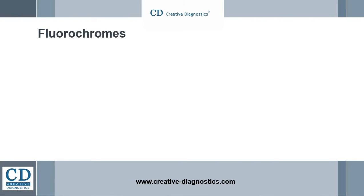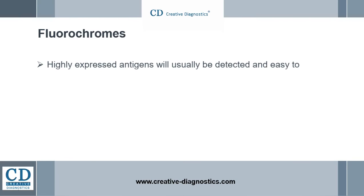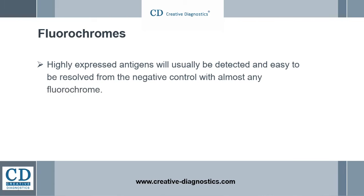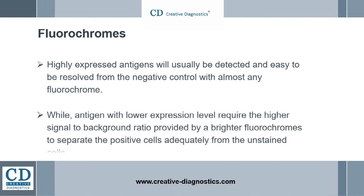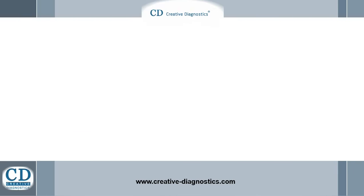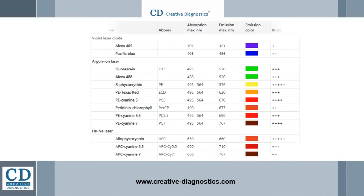The fluorochromes are usually fluorescence conjugated antibodies or fluorescence dyes. Highly expressed antigens will usually be detected and easy to resolve from the negative control with almost any fluorochrome. Antigens with lower expression levels require a higher signal-to-background ratio provided by brighter fluorochromes to adequately separate the positive cells from the unstained cells. This table displays parameters of common fluorochromes used for flow cytometry.